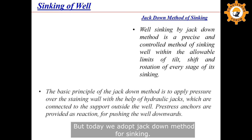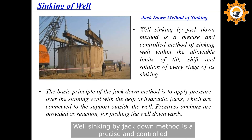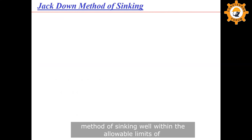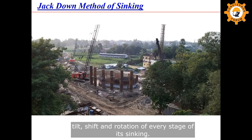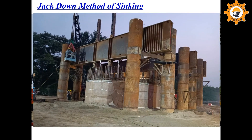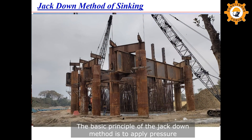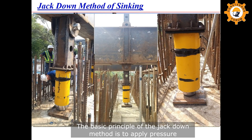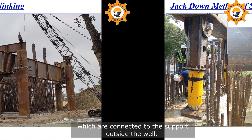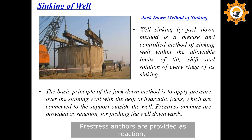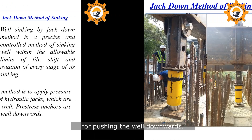But today we adopt the jackdown method for sinking. Well sinking by the jackdown method is a precise and controlled method of well sinking within the allowable limit of tilt, shift, and rotation at every stage of sinking. The basic principle of the jackdown method is to apply pressure over the steining wall with the help of hydraulic jacks which are connected to support outside the well. Pre-stressed anchors are provided as reaction for pushing the well downwards.